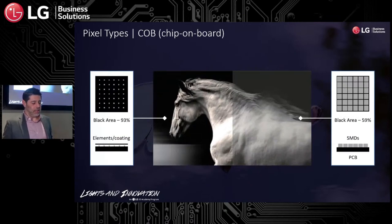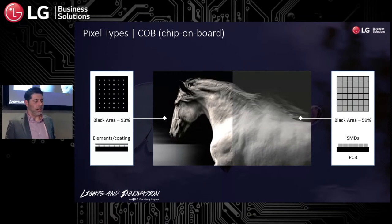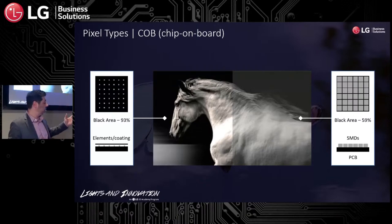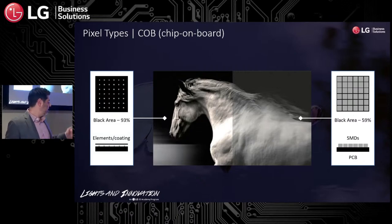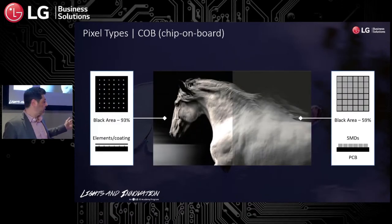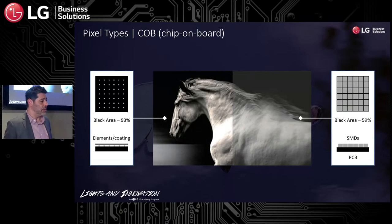With micro LED, we also get a lot more black area around the product itself — more black area means more contrast and finer picture quality. Compare that with SMD, which shows about 59% black area, and actually even less with tighter pitch. The diodes on an SMD product aren't exactly black — they're gray — so when the product is completely off, you see it's actually a very dark gray. Black levels with SMD are nowhere near where chip on board is today.